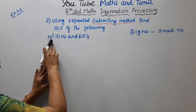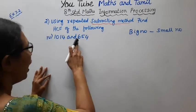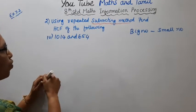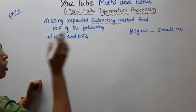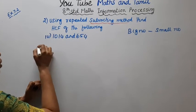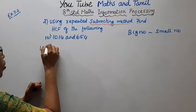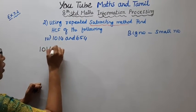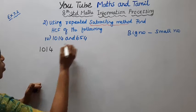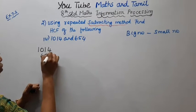Fourth subdivision: 1014 and 654. The concept is big number minus small number. First, the biggest number is 1014, and the smallest number is 654.